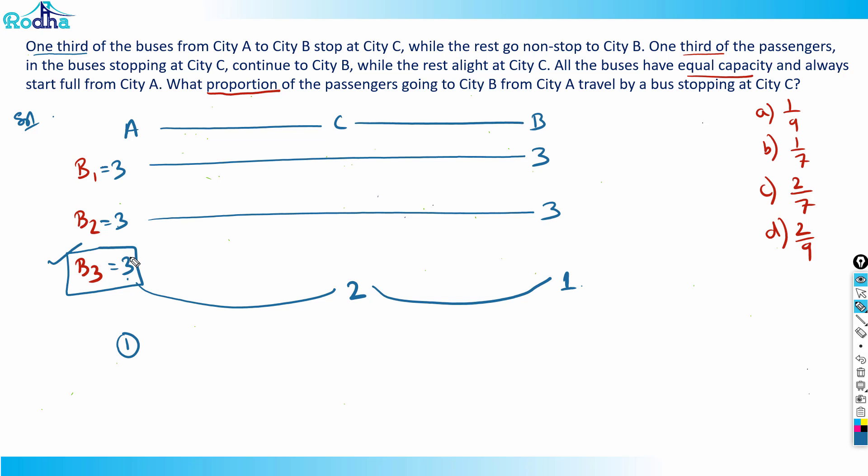Three persons from B1 came directly to City B, three persons from B2 came directly to City B, and one person from B3 came to City B. So total seven persons are going from City A to City B. Out of these seven people, how many traveled by the bus stopping at City C? Only one person. So my answer is 1/7. That's the answer.